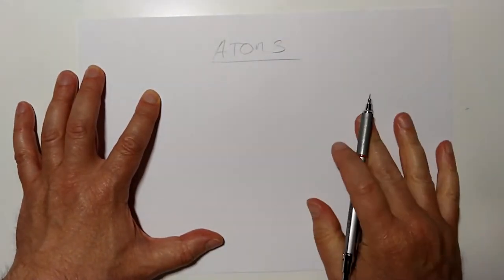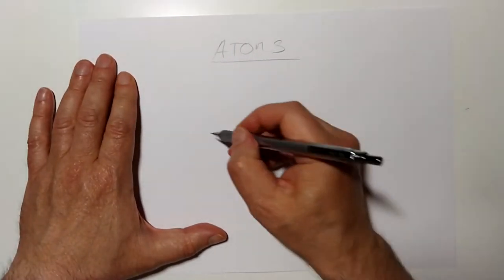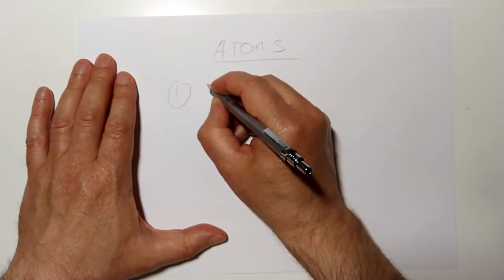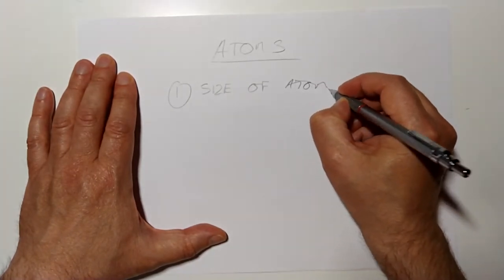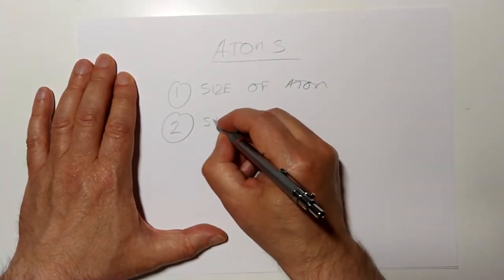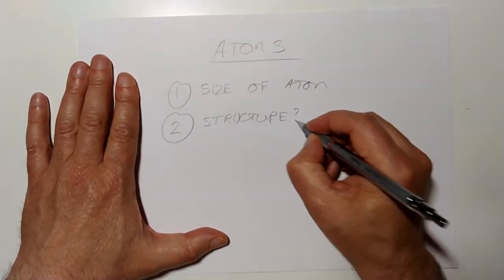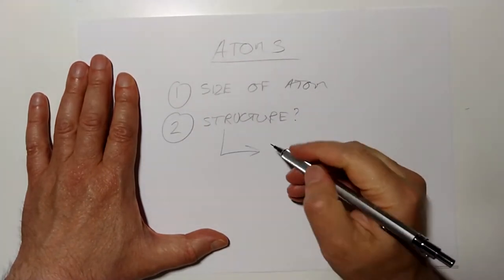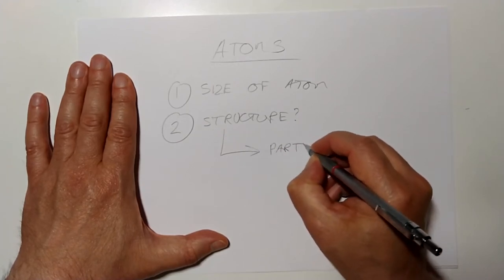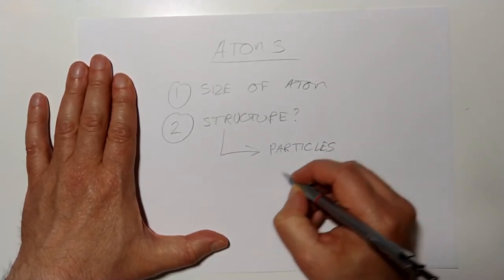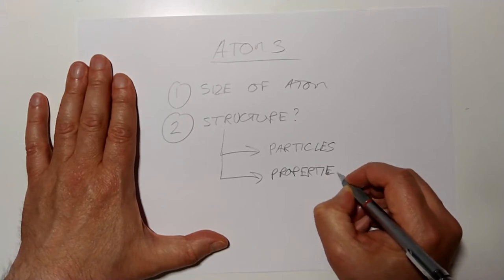There's nothing in the entire universe that's not made of atoms. So, the learning outcomes that I'd like to look at in this topic are: number one, I would like to look at the size, perhaps, of an atom. I would like to look at the structure of an atom. And I'm going to split that into two areas. I'm going to have a look at the even tinier little particles called subatomic particles. So we'll have a look at what particles make up atoms, we'll have a look at their properties, and we will have a look at how they are arranged.